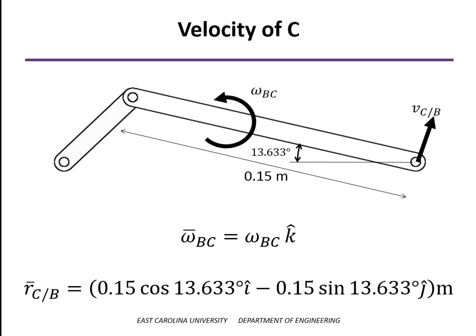The position vector of C relative to B would be the length, 0.15 meters, times the cosine of alpha in the x direction, and in the negative j direction, the length times the sine of the angle alpha.